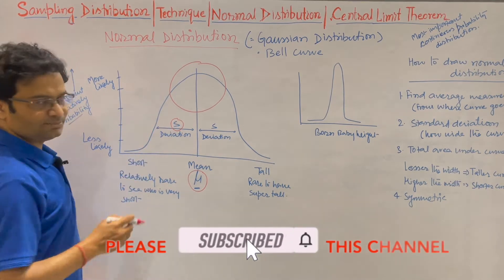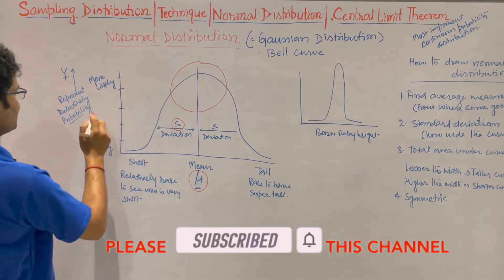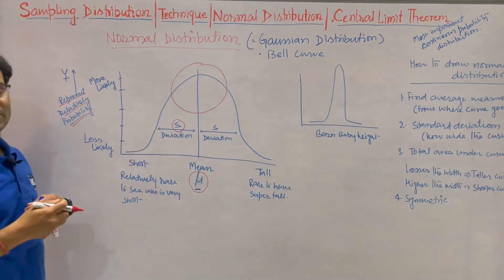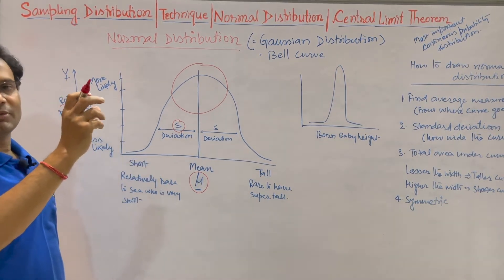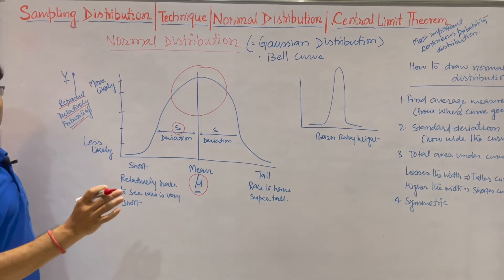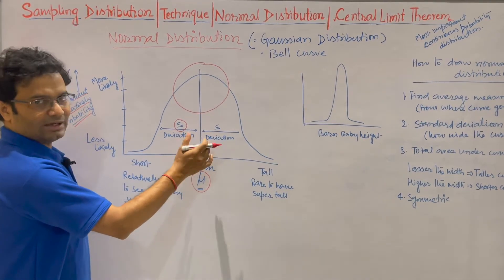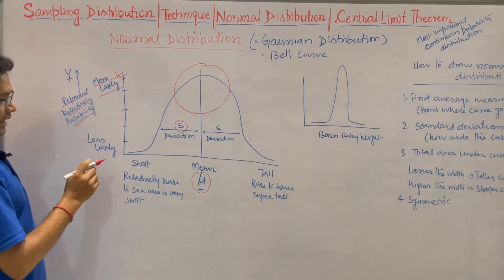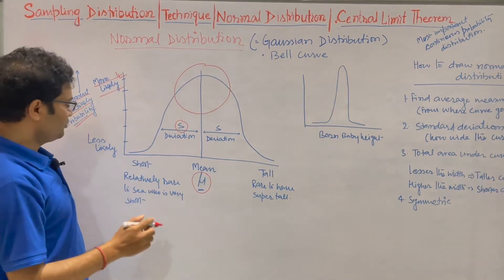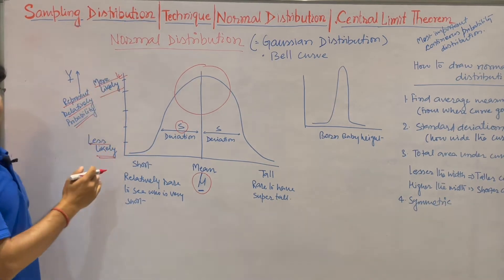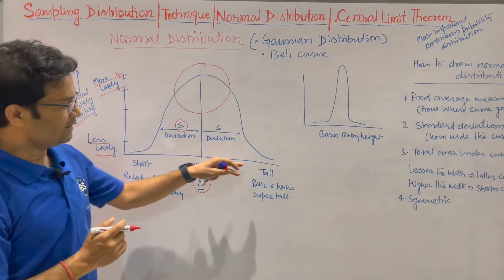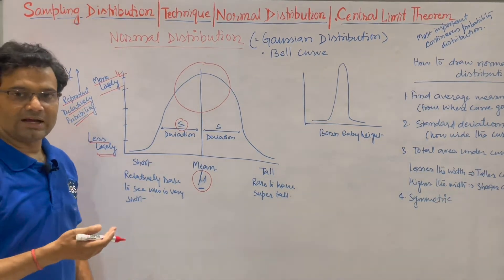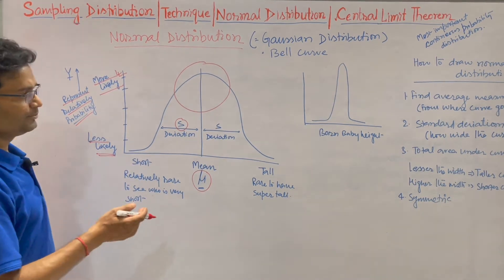Two parameters are important in normal distribution: one is mu and one is the standard deviation. The y-axis represents the probability. If you pick any person from the population, most likely their height will be near the mean — that is more likely. Very short and very tall people have very low chances. The y-axis represents the probability of the distribution, and the x-axis shows whatever parameter you are taking for your research — height, weight, income, education, or IQ.